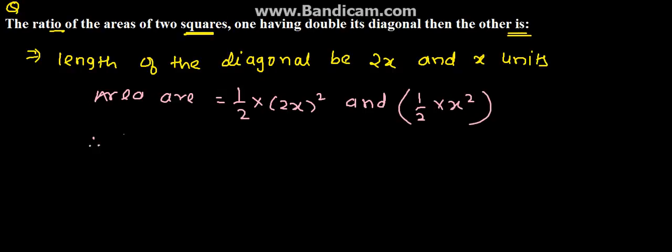Therefore, we can find the required ratio. This is the area of the first square and this is the area of the second. We can derive the ratio.